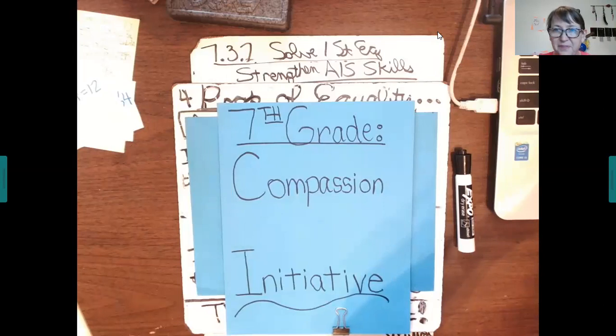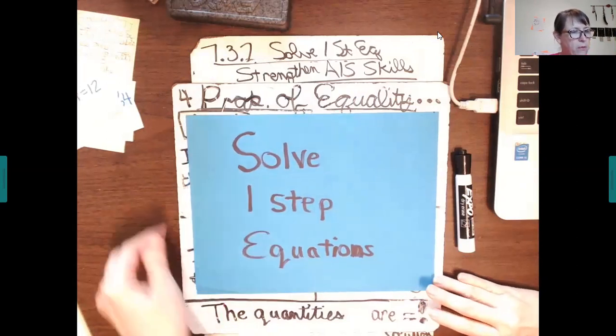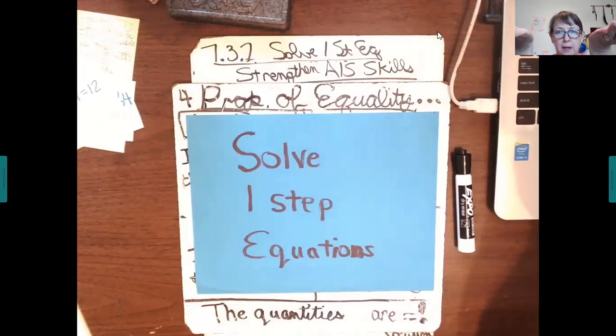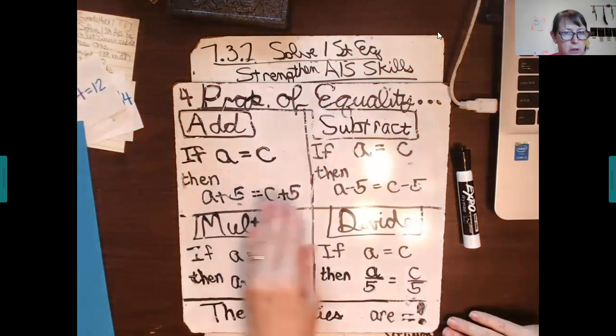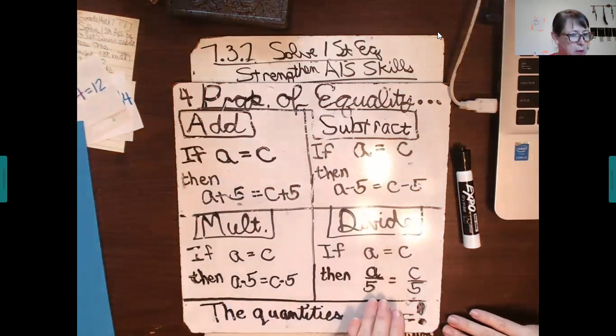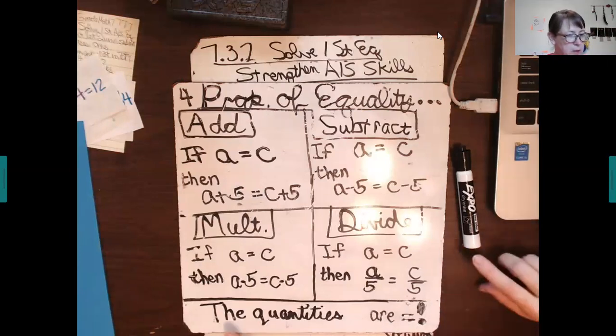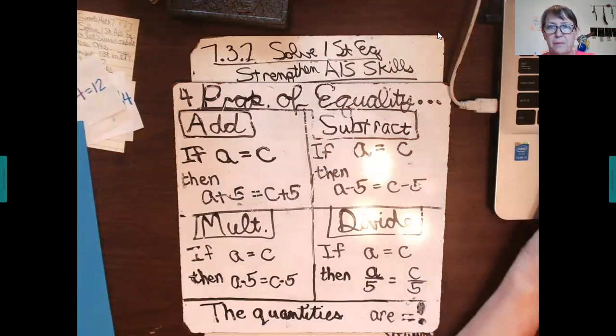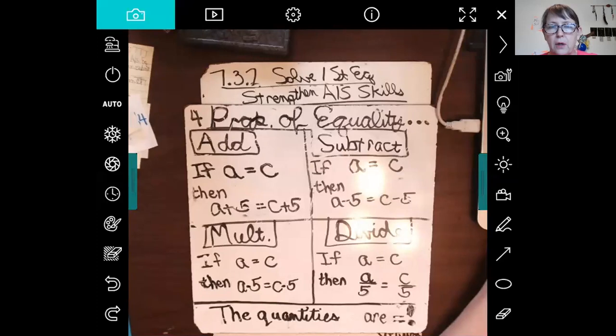All right, we will continue looking at solving one-step equations, keeping in mind that there are four properties of equality. Treat it like a balanced scale and you'll use each of these four properties of equality: addition, subtraction, multiplication, and/or division, doing the same thing to each side to keep the quantities equal.